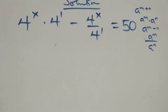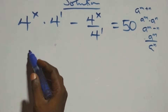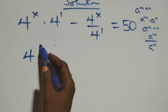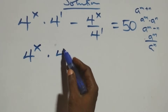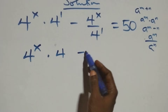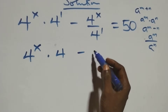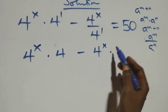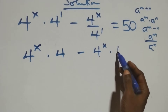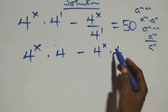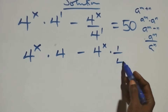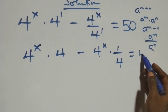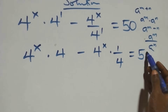Next step: we have 4 raised to power x times 4 raised to power 1, which is still 4, then minus. We can write this as 4 raised to power x times 1 over 4 raised to power 1, which is still 4, then equals 50 on this side.